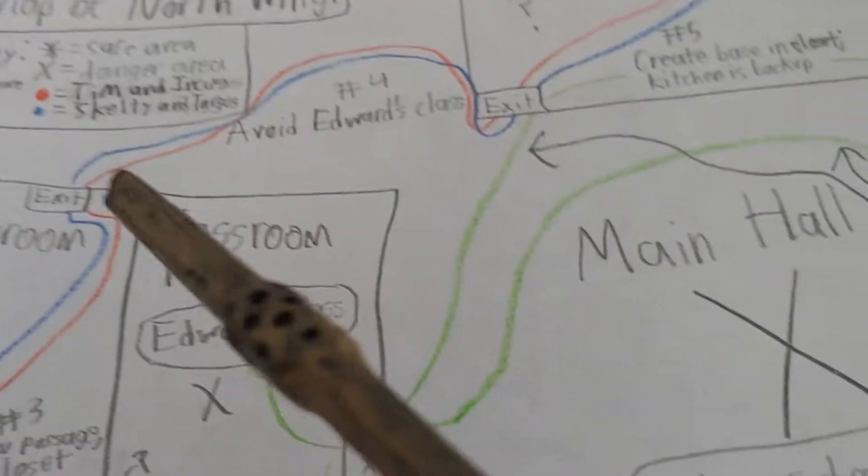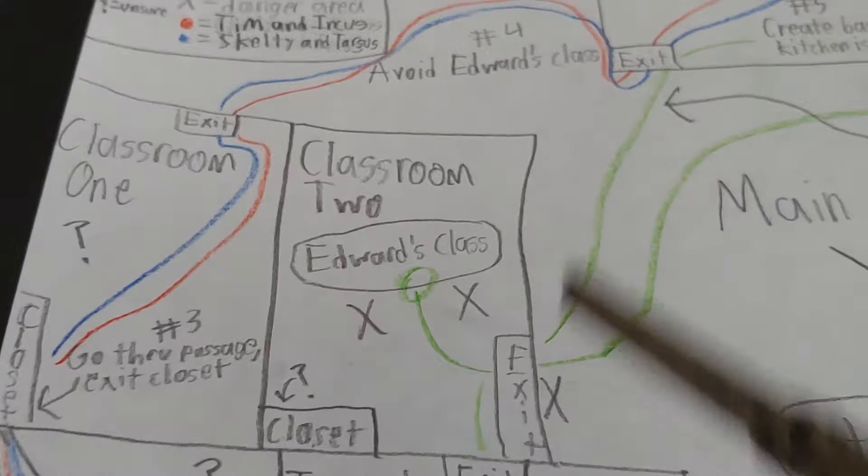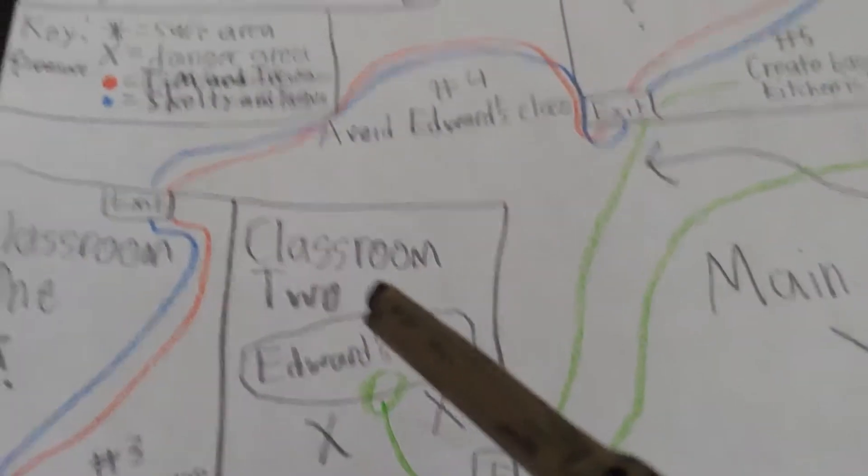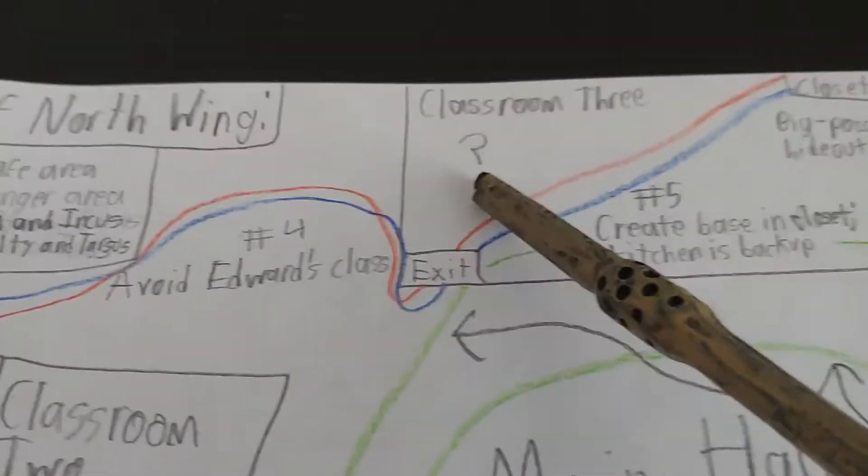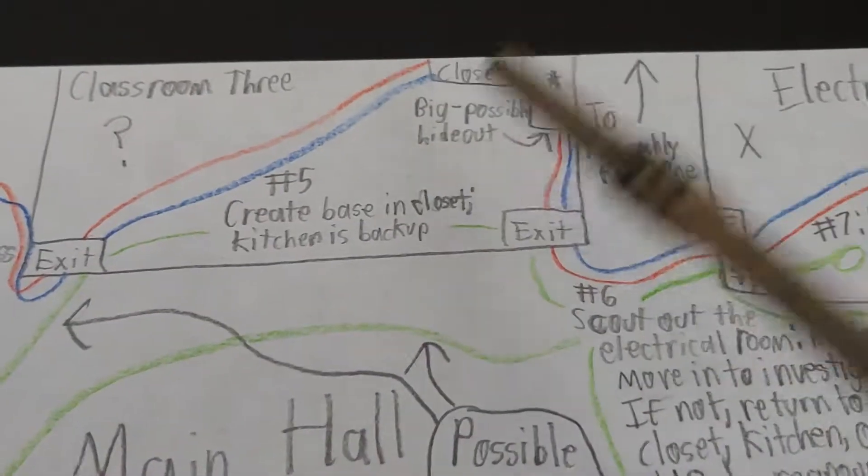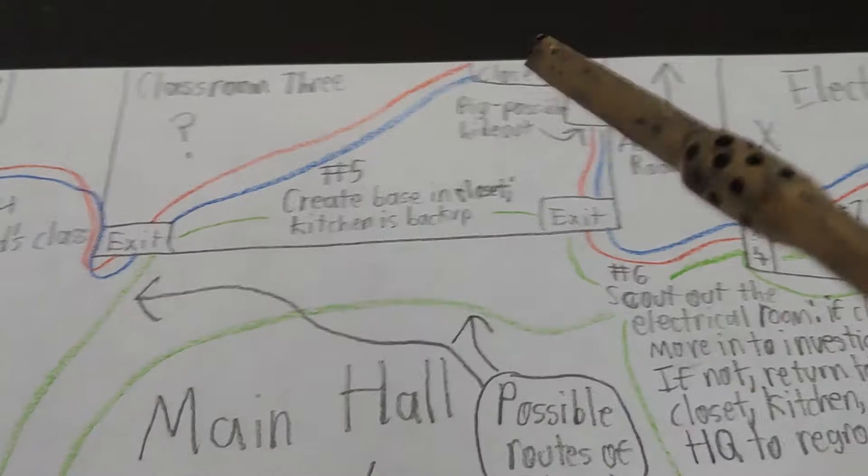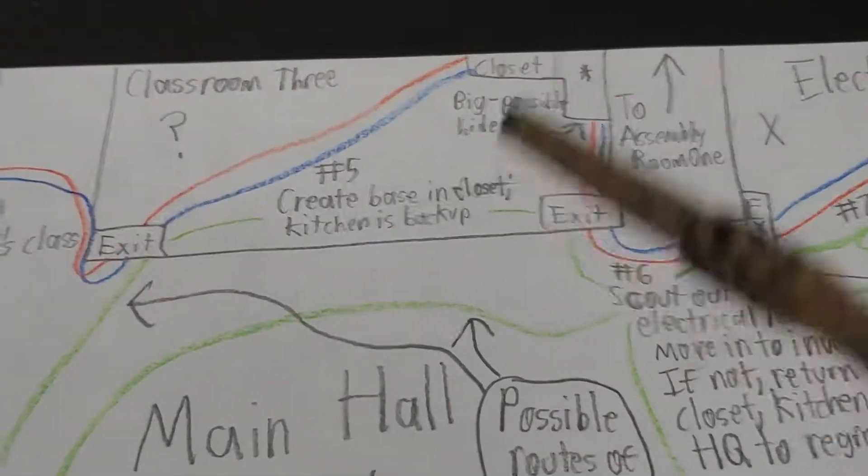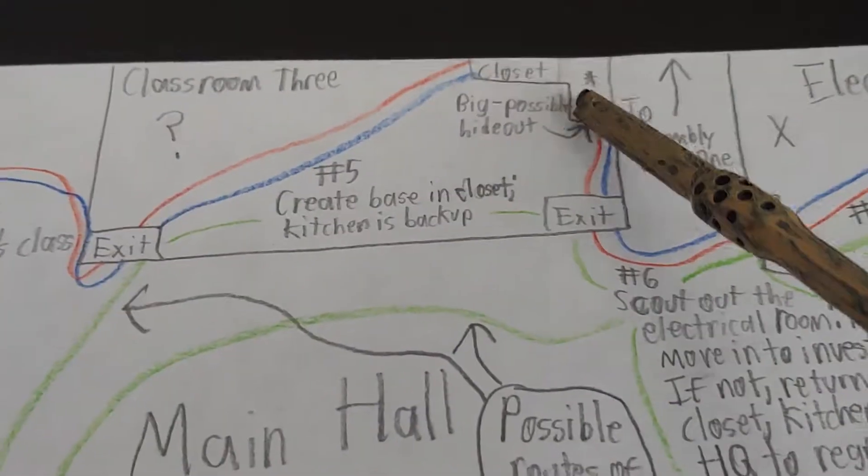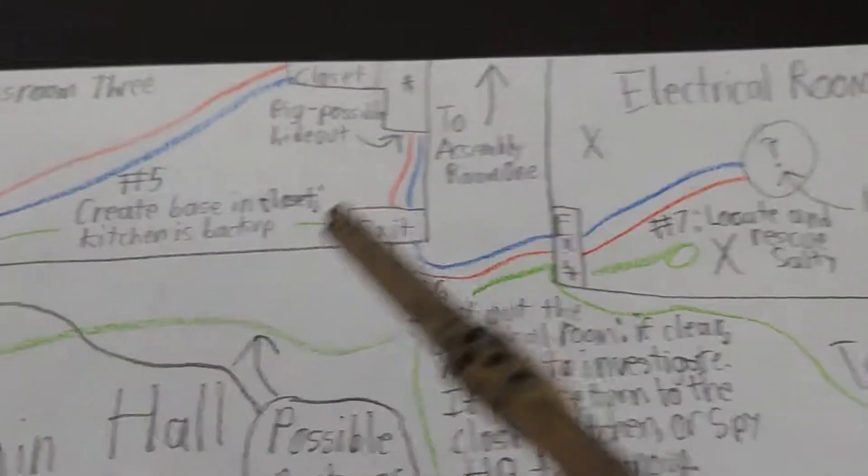Step four is avoid Edward's class. Normally we just cut right across the hallway and go straight to the electrical room, but Edward is right here, he could be here. We need to cut away from his class. Then we enter classroom three which is an unknown but we're pretty sure it will be safe. So we sneak across the classroom and go in this big closet and we create a forward operating base. The kitchen is the backup.